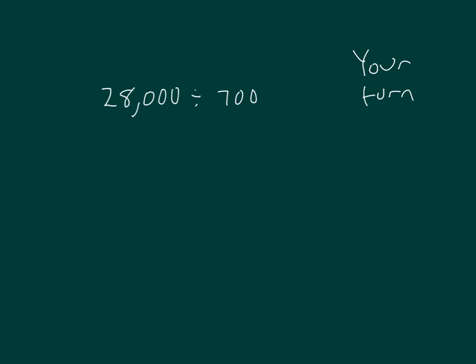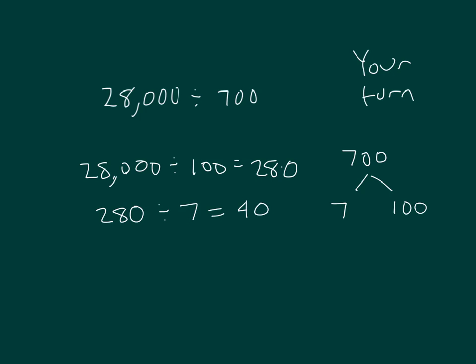Your turn again. 28,000 divided by 700. Pause the video while you do your work. 700 is broken down into 7 and 100. So we have 28,000 divided by 100 first to get 280. And then we take 280, we divide it by 7, we get our answer of 40. So 28,000 divided by 700 equals 40. Check over your work.